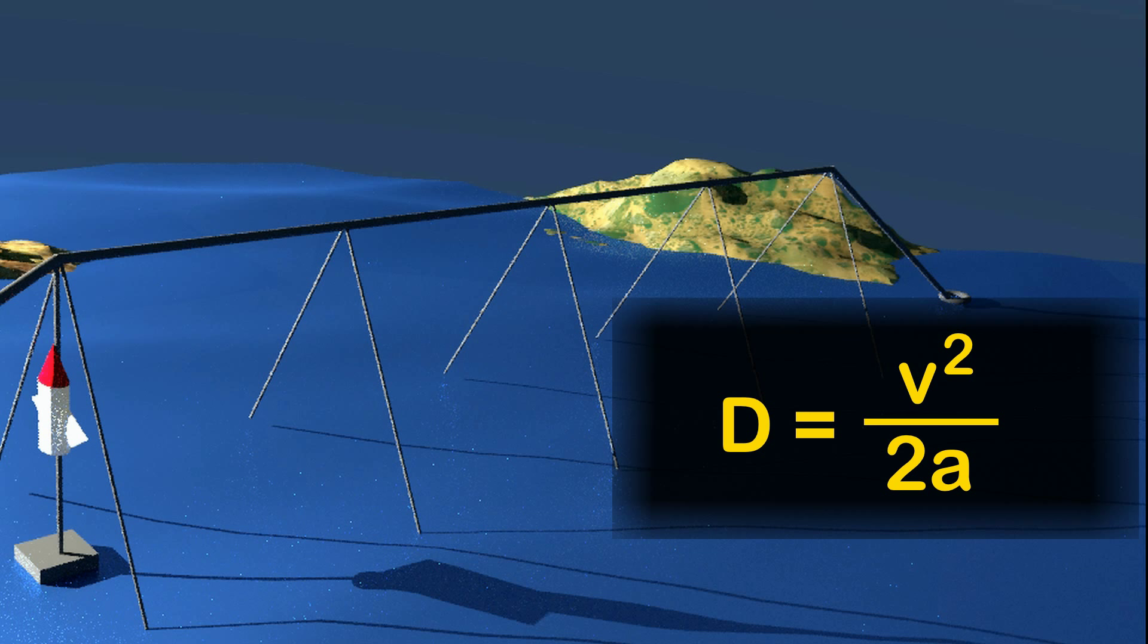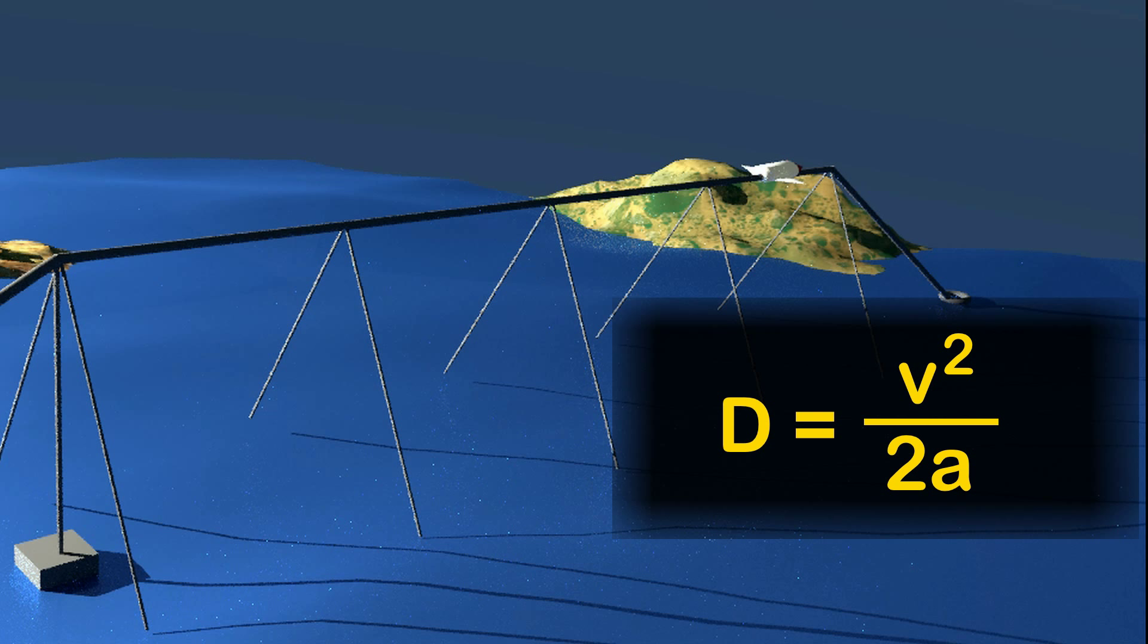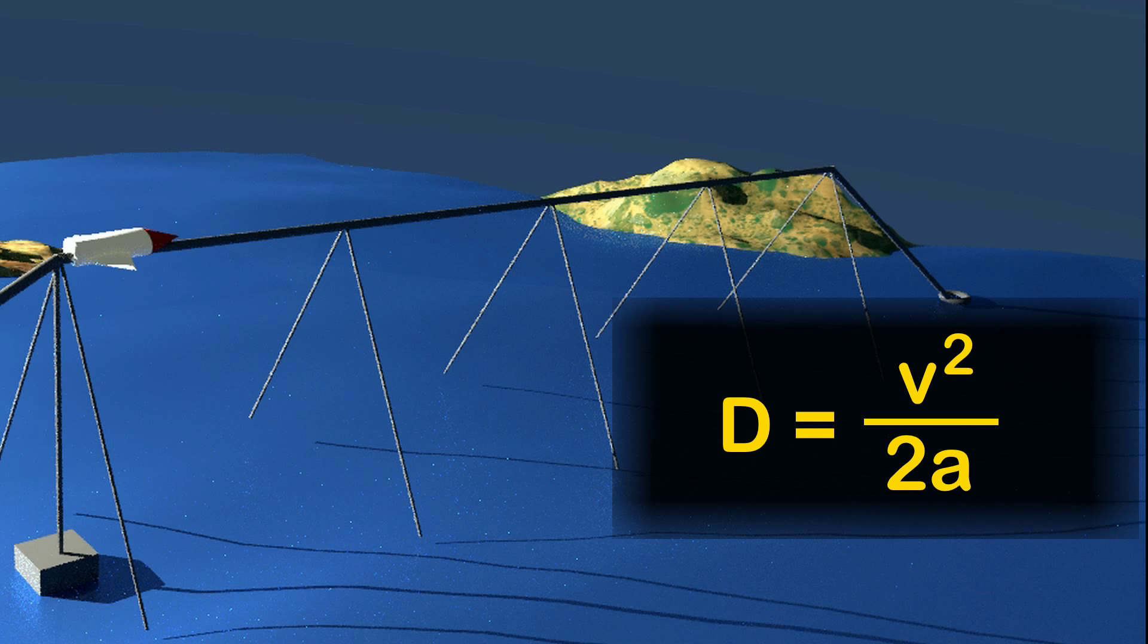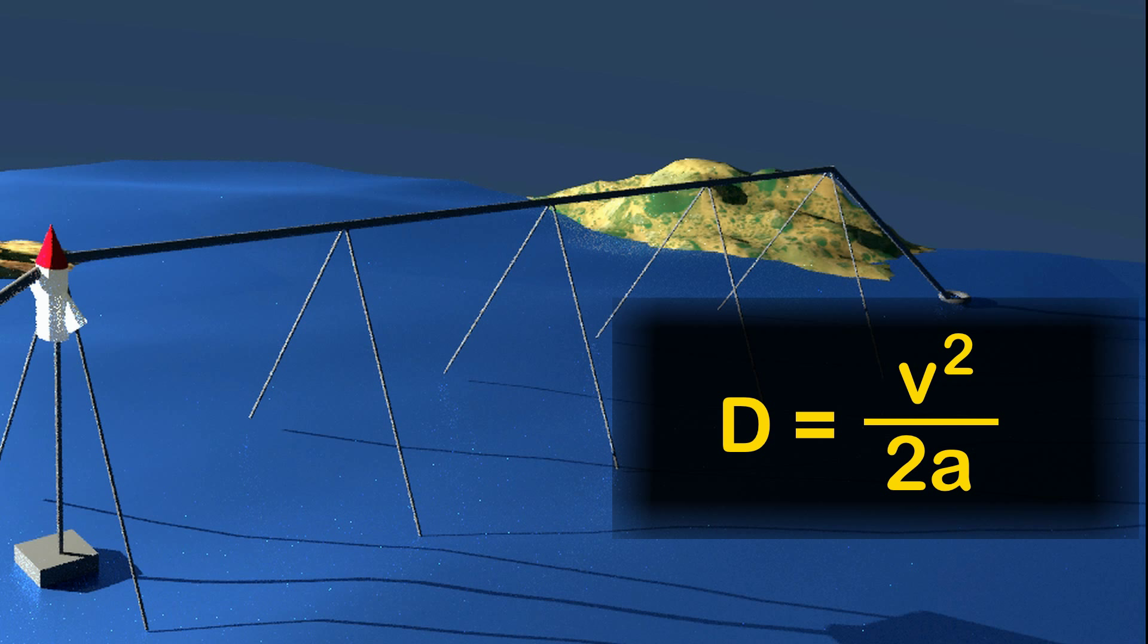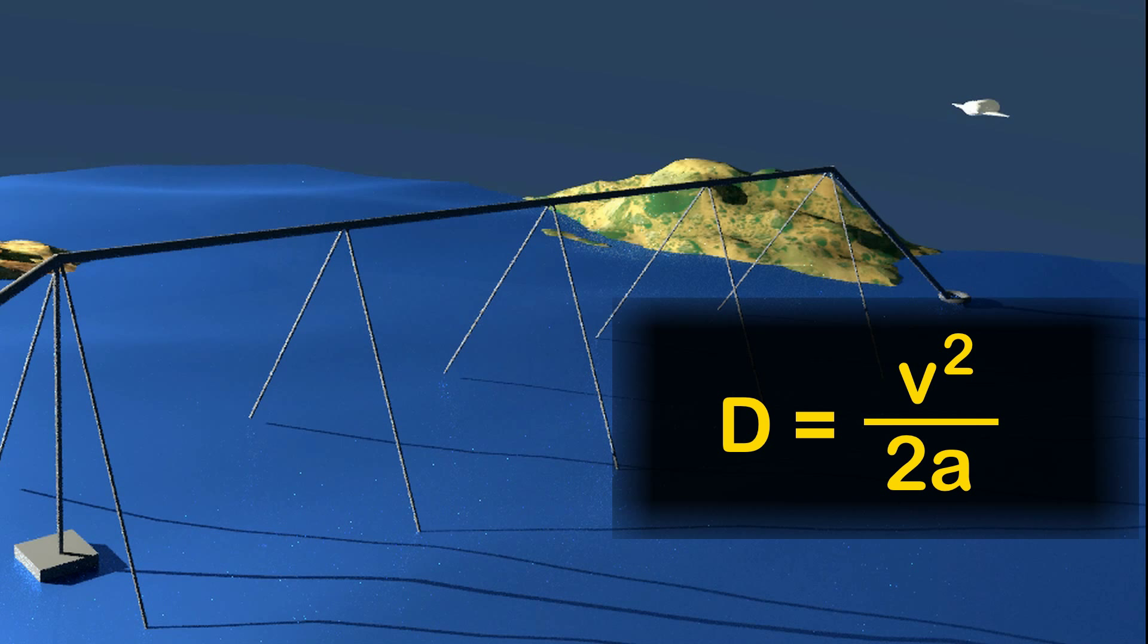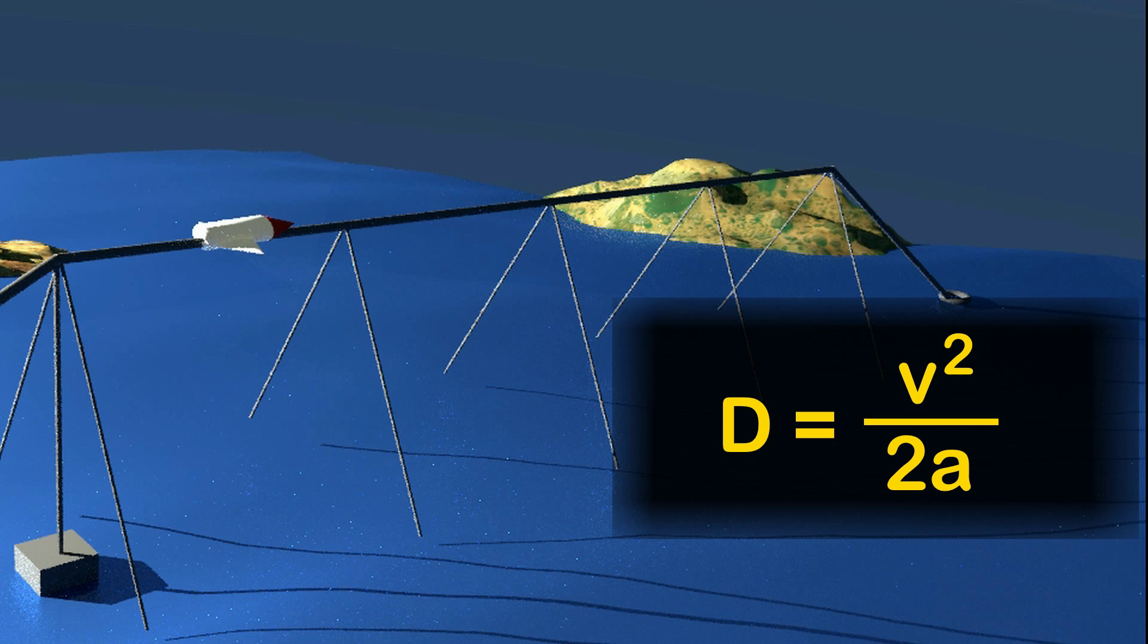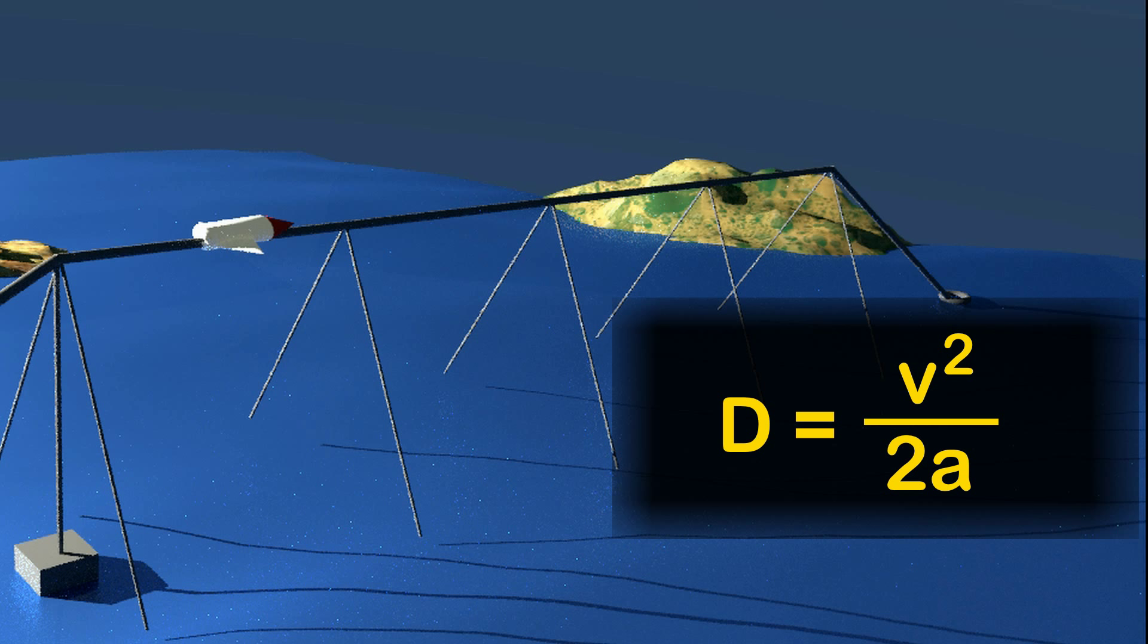The other way you can get a shorter track is with a higher rate of acceleration. The Lofstrom loop calls for a 3g acceleration, which is uncomfortable for people to endure but not too bad and they will only feel it for a few minutes. A track length for the same final velocities scales inverse to acceleration. Double your acceleration, half the distance of the track length.